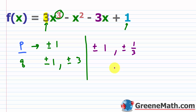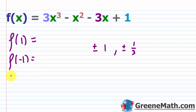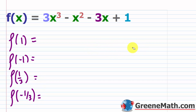Now that we have four possible rational solutions — 1, −1, 1/3, and −1/3 — we can test whether each one works. We can use synthetic division, or simply plug each value into f(x) and check whether the result is zero. So we ask: is f(1) = 0? Is f(−1) = 0? Is f(1/3) = 0? Is f(−1/3) = 0?